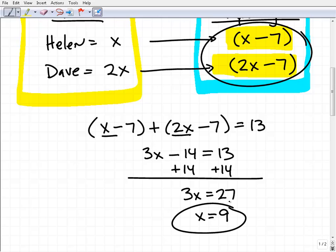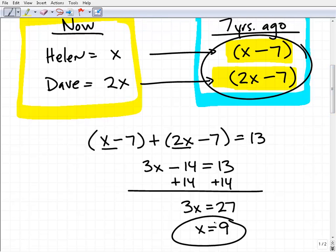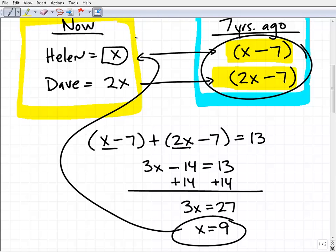So what does that mean? What is X? This is where you have to go back to where you established what your variable represents. Remember X was Helen's current age. So Helen would be 9 years old. And Dave is twice as old as Helen, so that would be 2 times 9 is 18. So it makes sense.